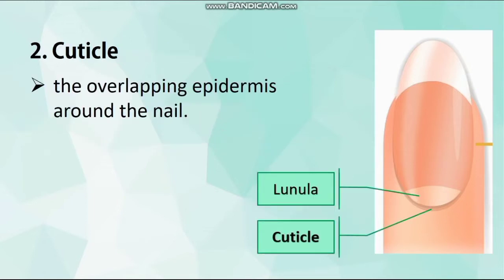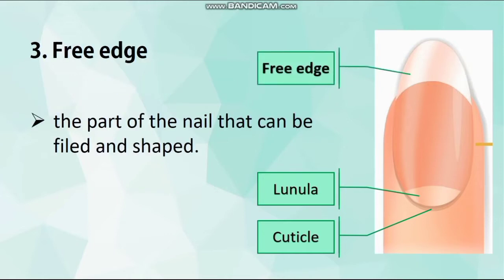Number 2: Cuticle. The cuticle is the overlapping epidermis around the nail. It is the transparent skin, also called the true cuticle, that is removed during the manicuring process. Number 3: Pre-edge. The pre-edge is the part of the nail that can be filed and shaped. It is an extension of the nail plate that overlaps the hyponychium.